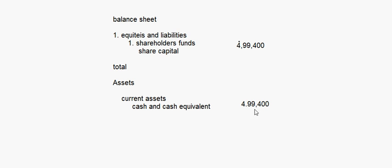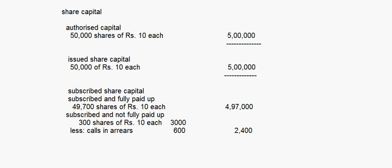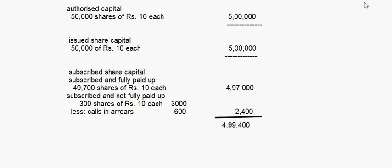That is the amount shown in the balance sheet. So this is how the balance sheet has to be presented. You put 4,99,400 here as the first note, and cash and cash equivalents will also be 4,99,400.